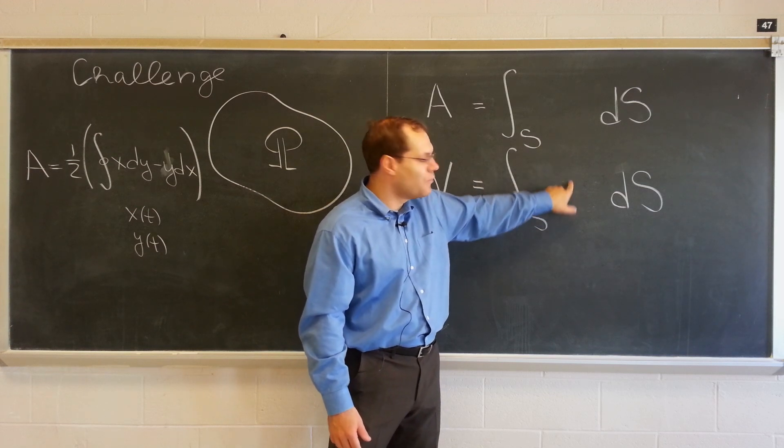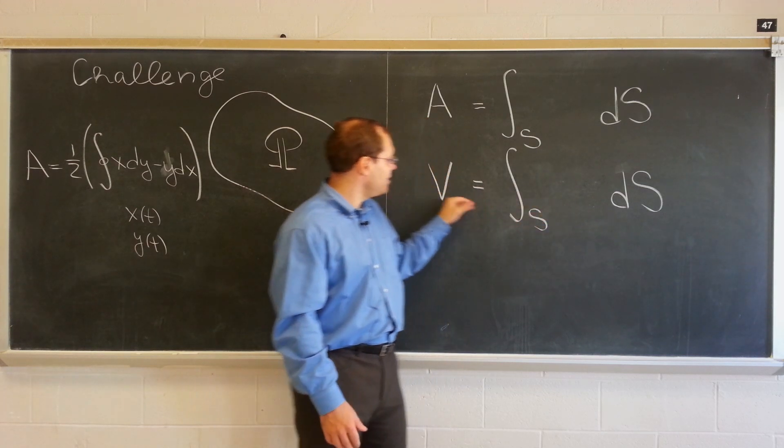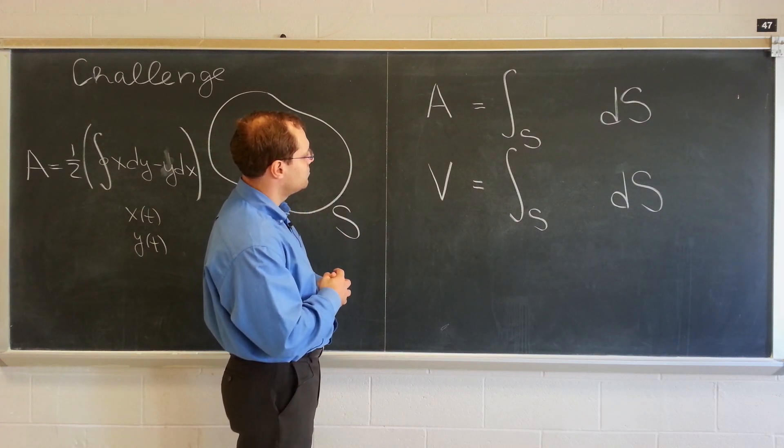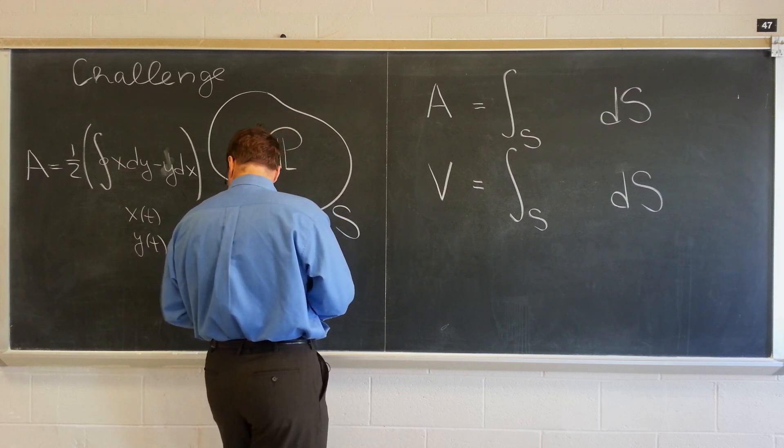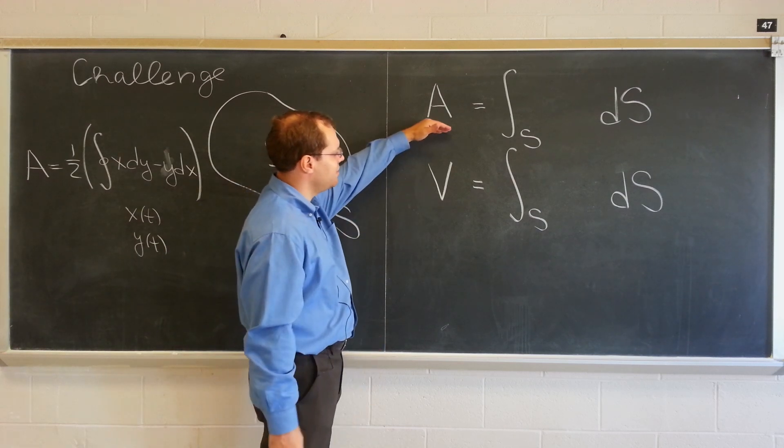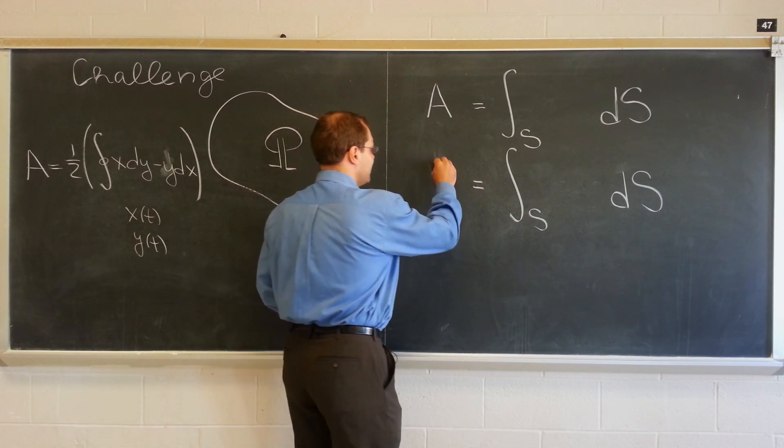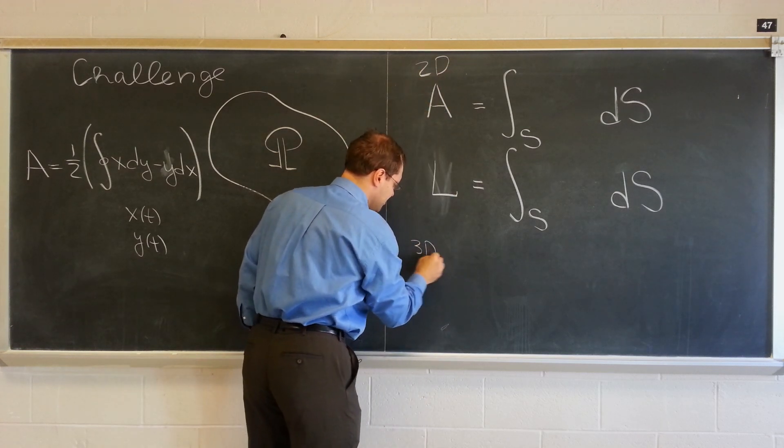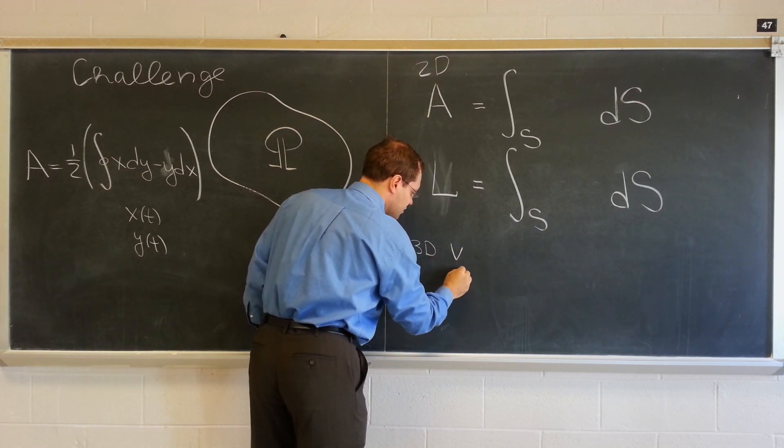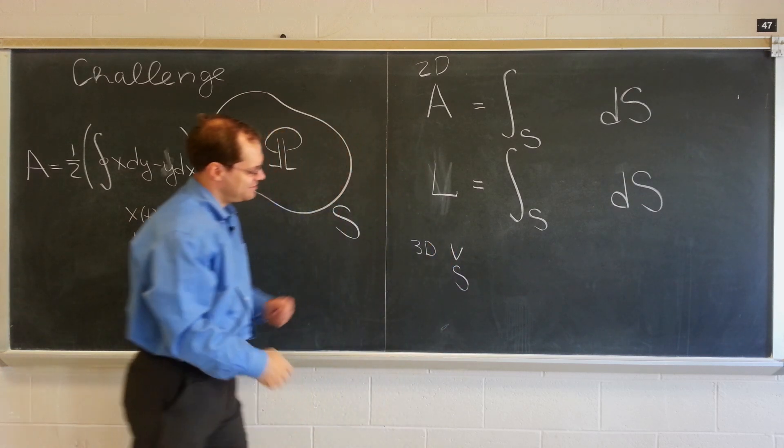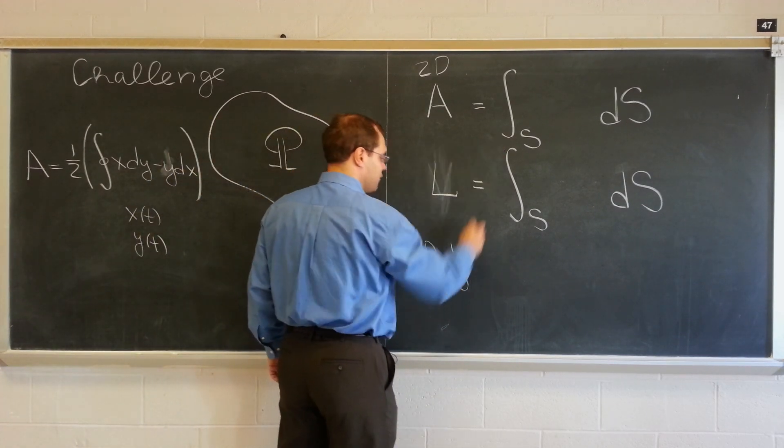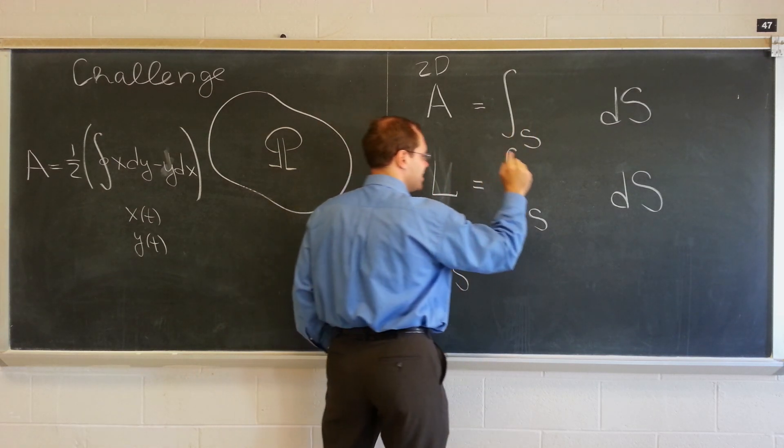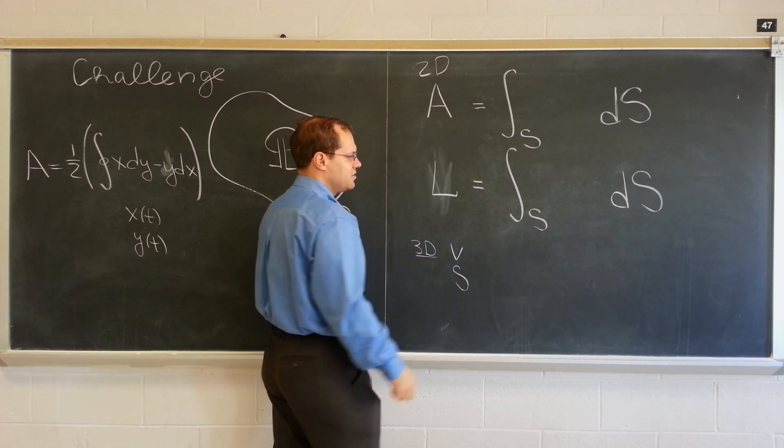The integral of one over the boundary is, let me change the letter. This would be the area and, I guess, this would be arc length. So, this is in 2D, while in 3D, we're after volume and, I guess, surface area, which I'll denote by S over using letters and things like that. But the formulas need to be identical. So, this formula should give you volume in three dimensions and this formula should give you surface area in three dimensions.